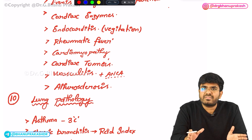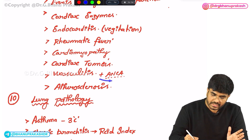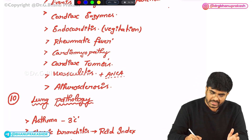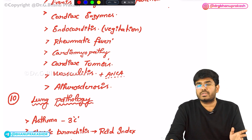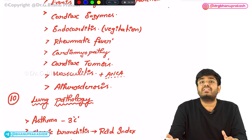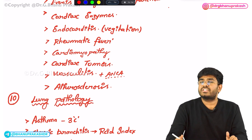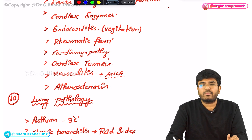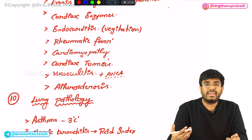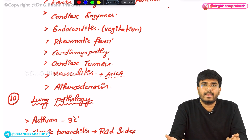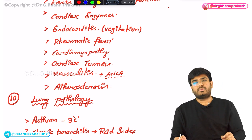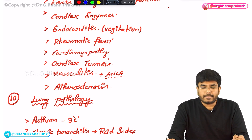In vasculitis, know the medium vessel, small vessel, and large vessel vasculitides along with their ANCA associations. For example, Wegener's granulomatosis has C-ANCA positivity. Know which type has P-ANCA positivity, which is associated with smoking, which features necrotizing vasculitis, which is an example of granulomatous vasculitis, and which is associated with asthma. Regarding atherosclerosis, know the most common vessels involved, that foam cells are lipid-laden macrophages eating oxidized LDL cholesterol, and the most common site — the abdominal aorta at the bifurcation point.